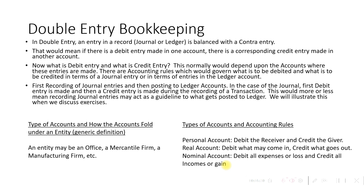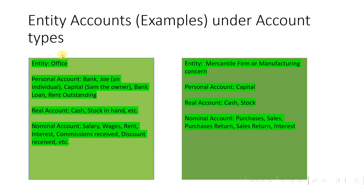These accounts belong to a particular business entity, which may be an office, a mercantile firm, or a manufacturing firm. For a mercantile firm doing buying and selling of goods, there is a different set of accounts. A manufacturing firm dealing with raw materials and finished goods would have yet another different set of accounts — this is what is called entity accounts.